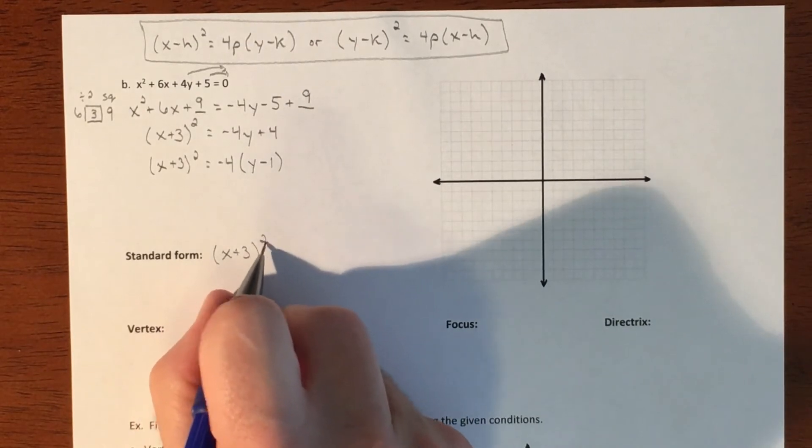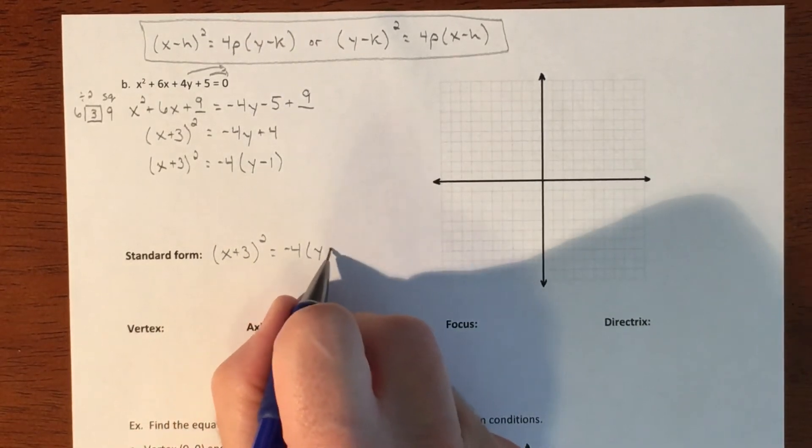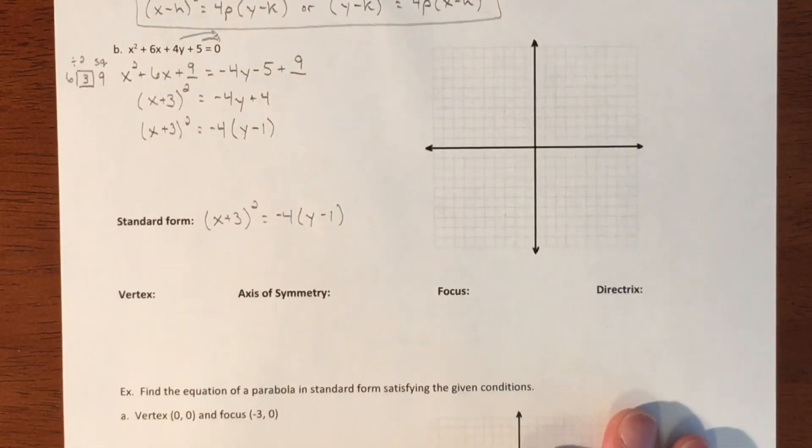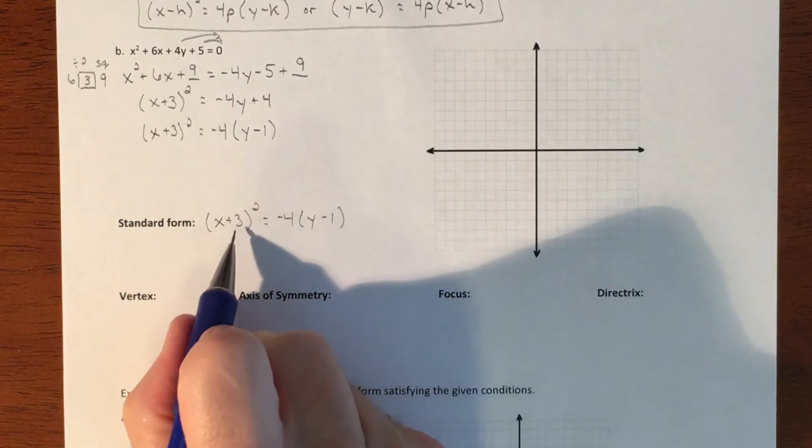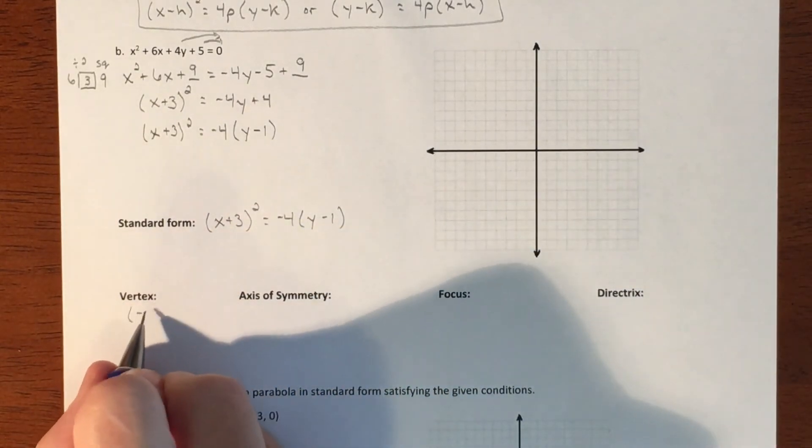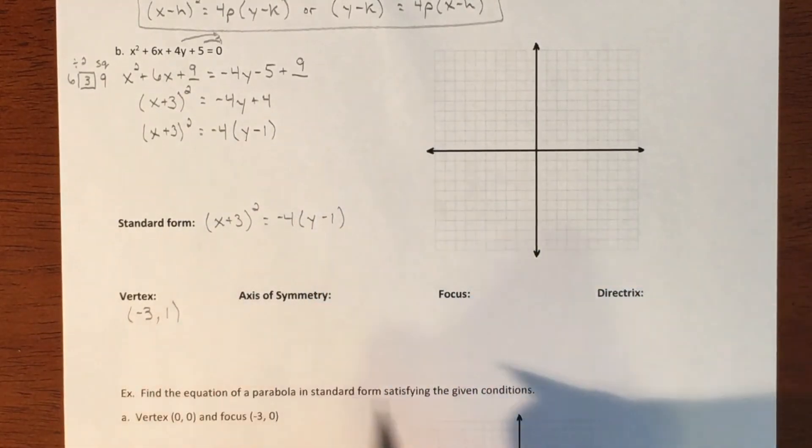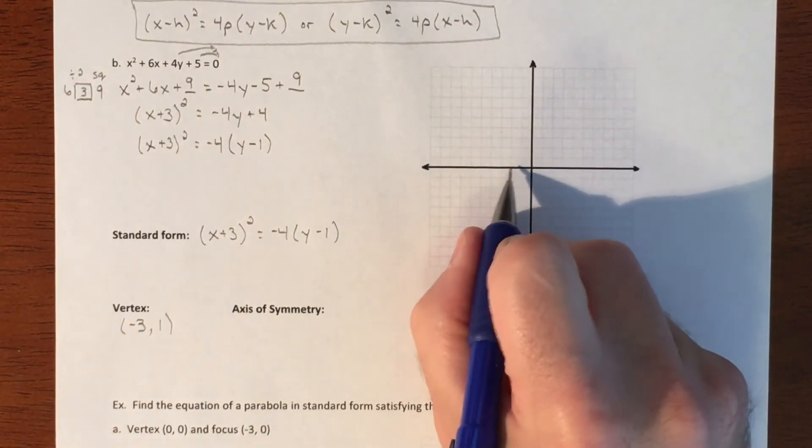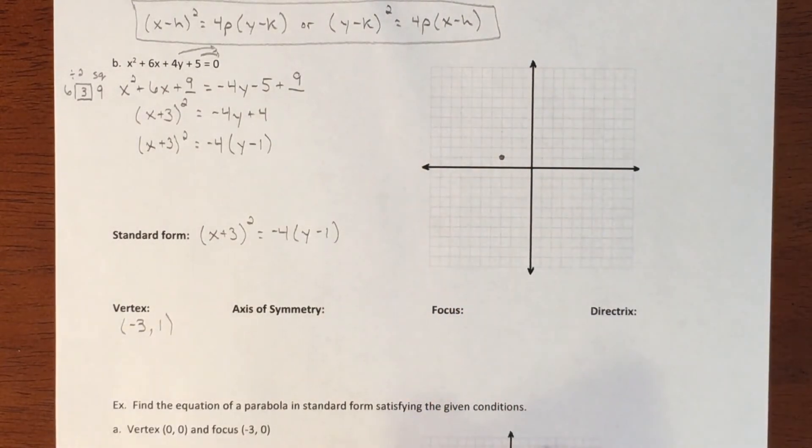x plus 3 squared equals negative 4 times y minus 1. So that's what we need in order to pull all the information that we need out of it. So this is going to give us our vertex. So our vertex is left 3 and up 1. Okay. So this graph is going to start left 3, up 1. All right. I got that so far.